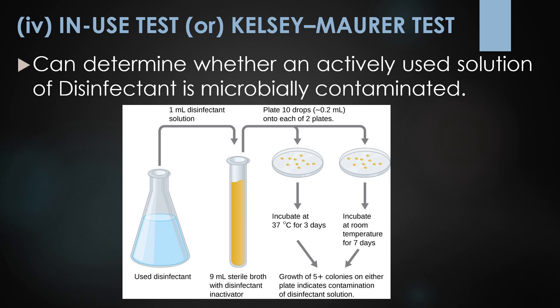The fourth method is the in-use test or Kelsey-Morrer test, which determines whether an actively used disinfectant solution is microbially contaminated. 1 ml of the used disinfectant is diluted into 9 ml of sterile broth containing a disinfectant inactivator. Ten drops totaling approximately 0.2 ml are inoculated onto two agar plates — one incubated at 37°C for three days and the other at room temperature for seven days. Growth of five or more colonies on either plate indicates microbial contamination.